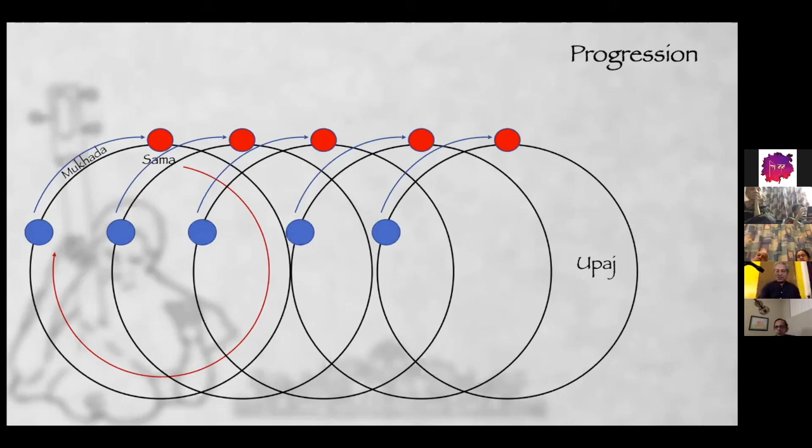And continue from one Avaratan to the next. So when you move from one Avaratan to the next Avaratan, that is called as Badhat. So now that is where the Raag is now progressing. It is progressing from Avaratan to Avaratan, and that is why I like saying that Avaratan is the unit of progression or unit of development.